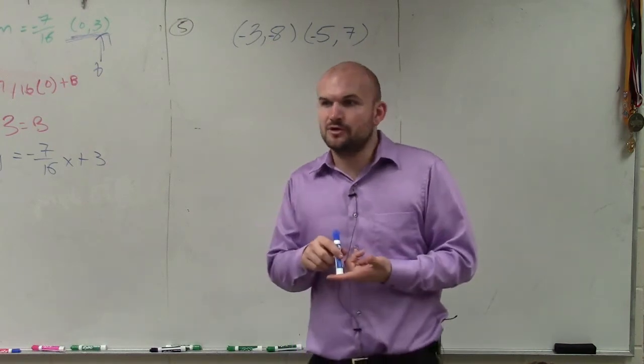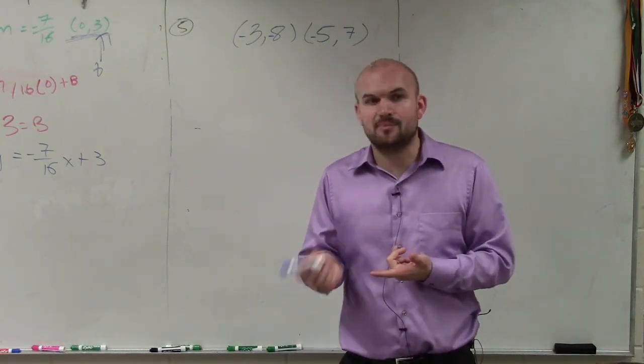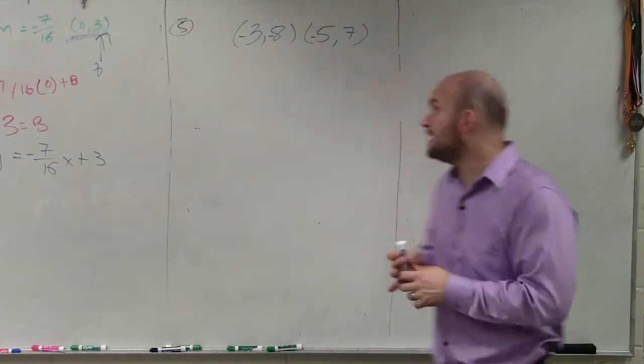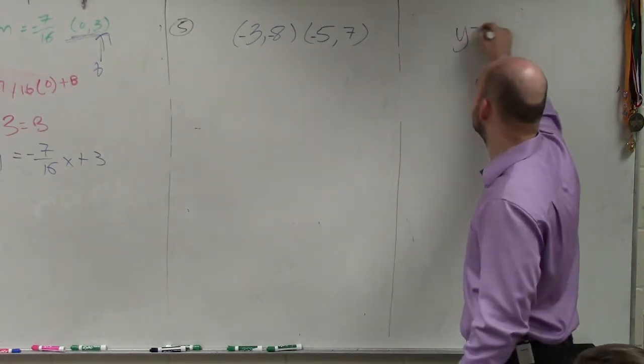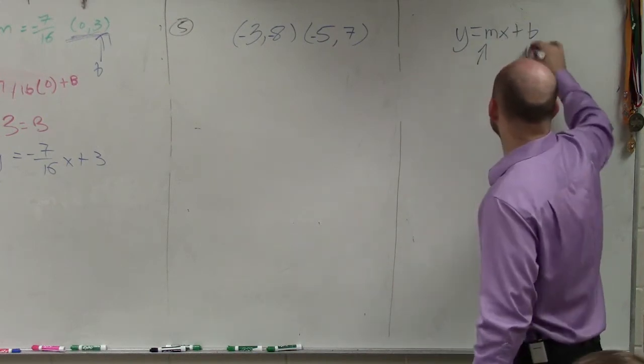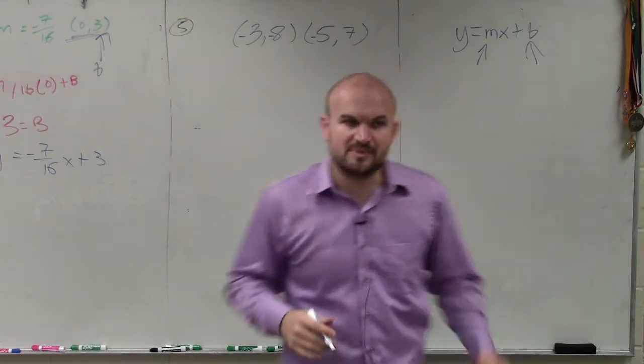I gave you the slope and a point, and we had to write the equation. Now I'm just giving you two points. So to write the equation of the line, which is in the form y equals mx plus b, now we don't know what the slope is, and we don't know what the y-intercept is. Because remember, the point for the y-intercept is 0 comma b.